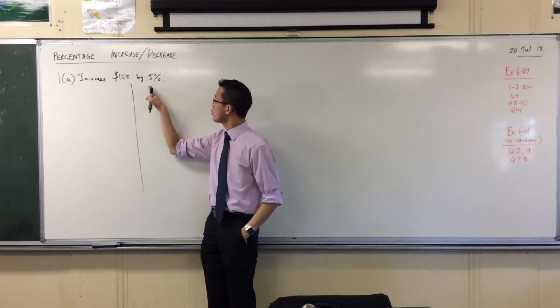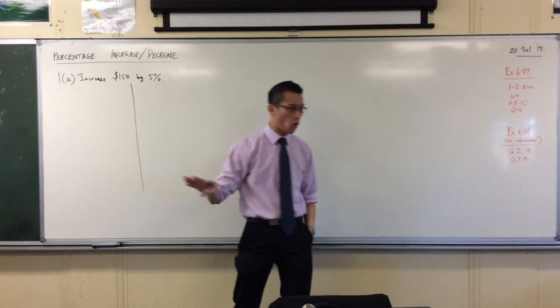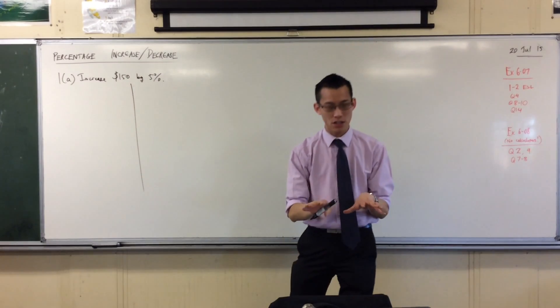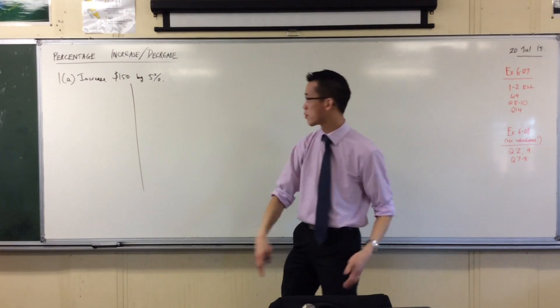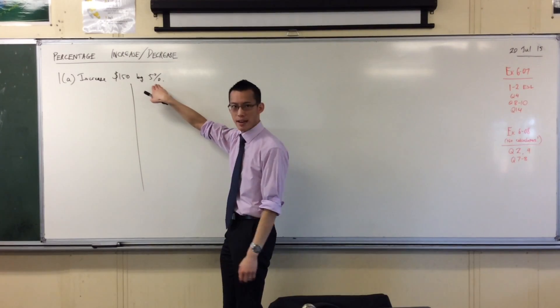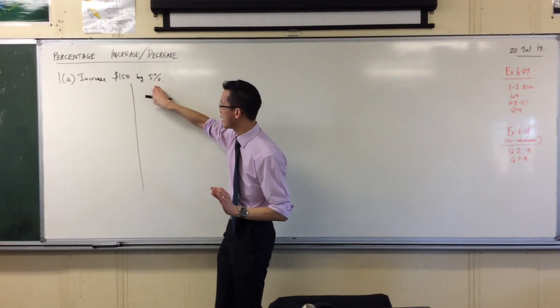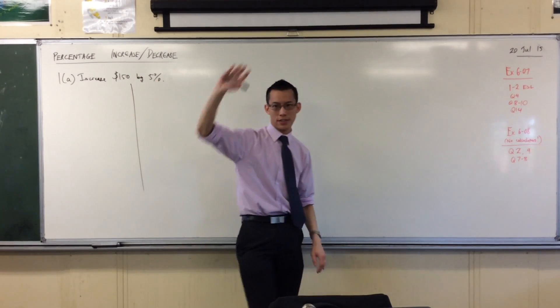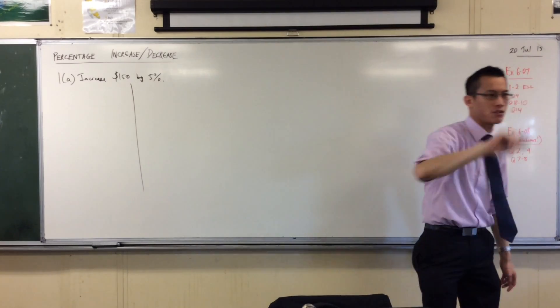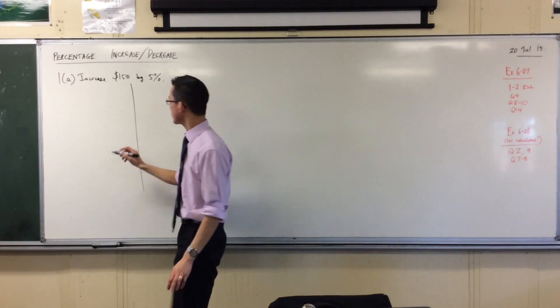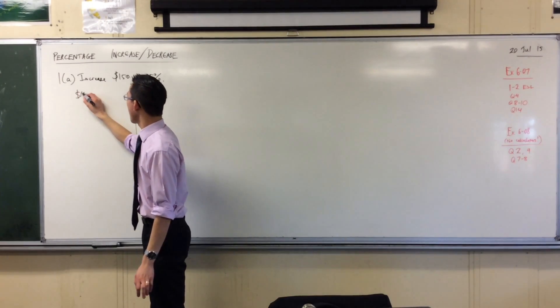We know how to do percentages of a quantity already. If I just slightly change the question to show you my first approach, how do I calculate 5% of 150? Hands up, tell me what should I write? You put 150 over 5. Okay, so I can do 150.